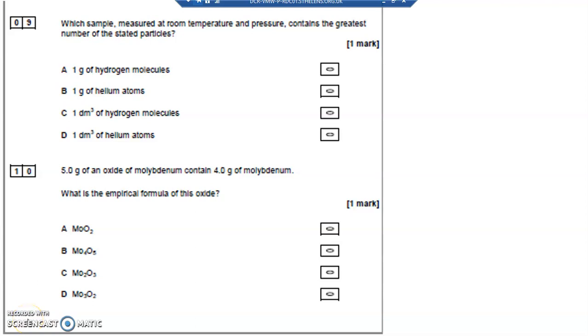Question 9. Which sample measured at room temperature and pressure contains the greatest number of particles? Well, the number of particles in a mole is 6.022 times 10 to the power 23, Avogadro's constant.